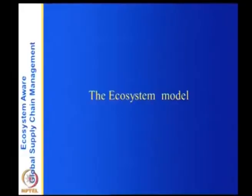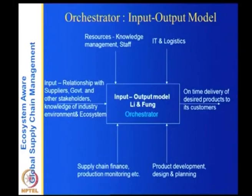We are going to continue this lecture on Li and Fung and complete the ecosystem map. In the previous lecture, we mapped one part of the ecosystem — the service chain. Now we will see the other part of the ecosystem and map it as well. Before mapping, let us look at what is the input-output model of Li and Fung.